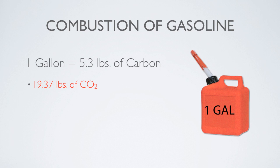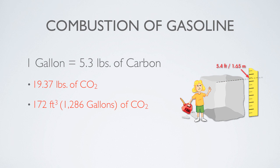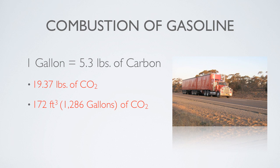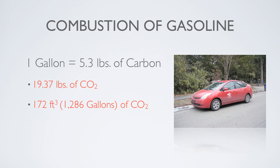Similarly, what was initially 1 gallon of gasoline resulted in 172 cubic feet, or the volumetric equivalent of 1,286 gallons of carbon dioxide. This is because the carbon atoms combine with oxygen atoms from the atmosphere during the combustion process to form carbon dioxide molecules. Consequently, every gallon of gasoline that is combusted, whether in a semi-truck or a Toyota Prius, will result in 19.37 pounds of carbon dioxide emissions, with no exceptions.